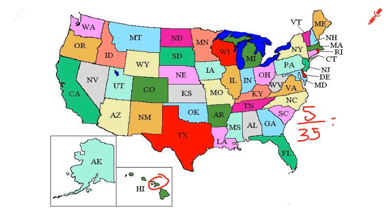Now that one can be reduced. What goes into both 5 and 35? 5 does. 5 goes into 5 one time. 5 goes into 35 seven times. So he's visited one-seventh of the parks. So you might put one-seventh visited. And then the second part of the question, what fraction has he not visited?